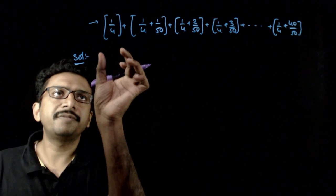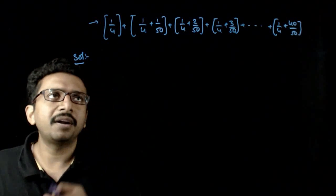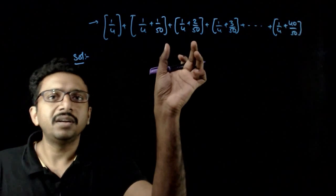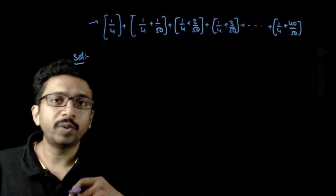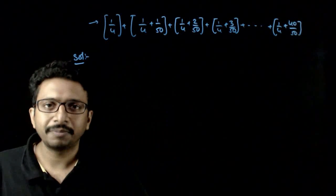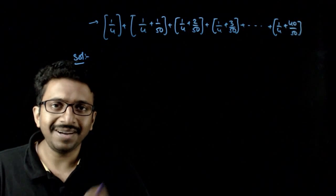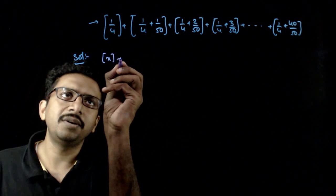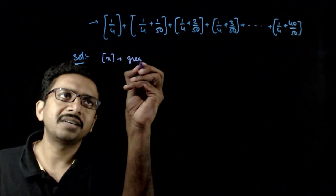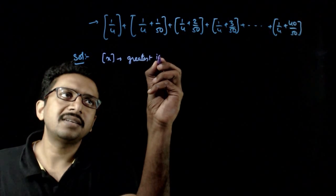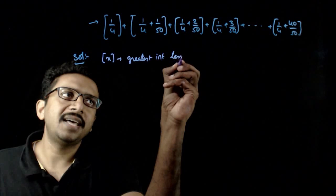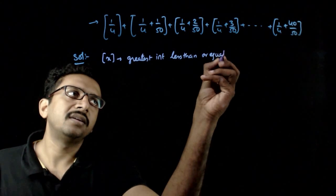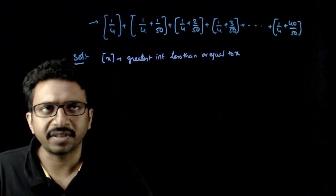Welcome students. In this question, you are asked to find the sum of the integer part of 1/4, integer part of 1/4 plus 1/50, integer part of 1/4 plus 2/50, integer part of 1/4 plus 3/50, and so on. First, you need to understand what integer part is. The integer part of x denotes the greatest integer less than or equal to x. That is the definition of integer part of x.